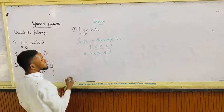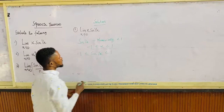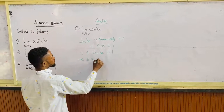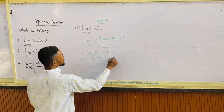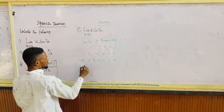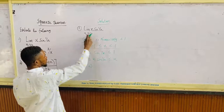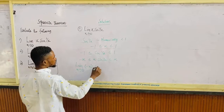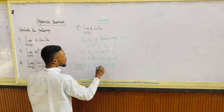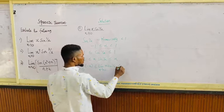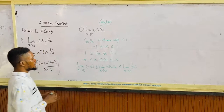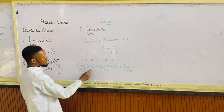And here the function is x sine 1 over x. So we can multiply all through by x, that means minus x is less than or equal to x sine 1 over x less than or equal to x. That means the limit of minus x at which x tends to 0 is less than or equal to the limit of x sine 1 over x, which is less than or equal to the limit of x at which x tends to 0.